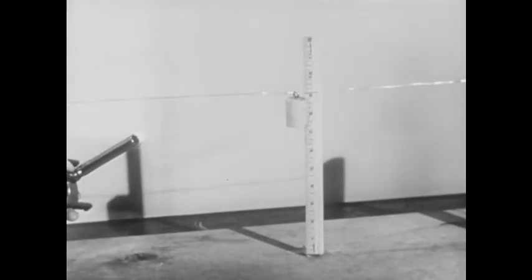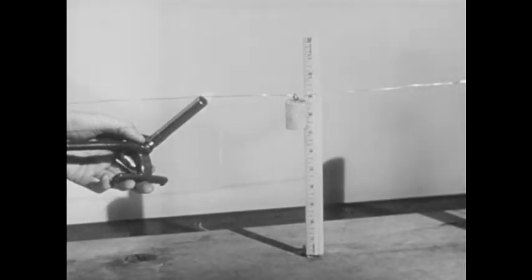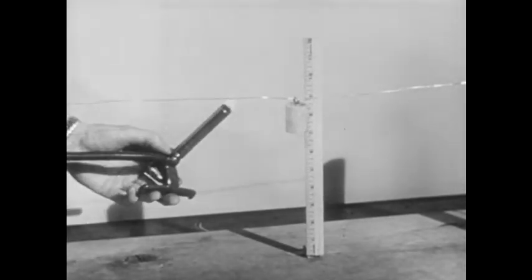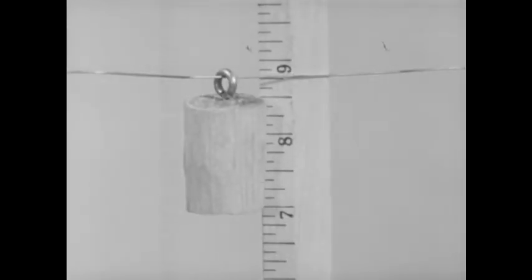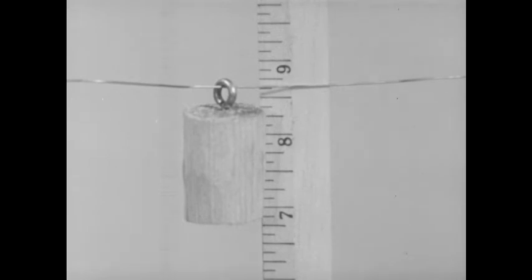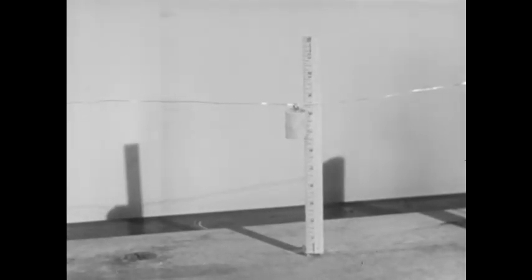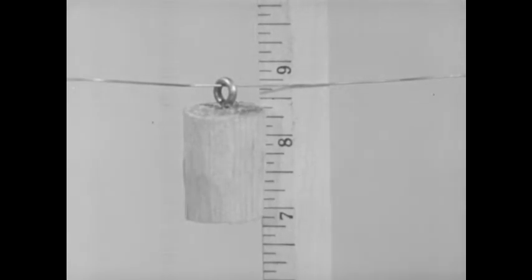Heat can also change the size of materials. Watch what happens when we heat the wire. The weight sinks. The wire must have become longer. When it cools off, the weight rises. The wire becomes shorter again.